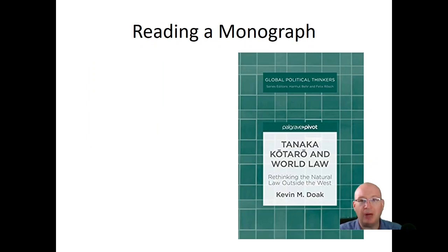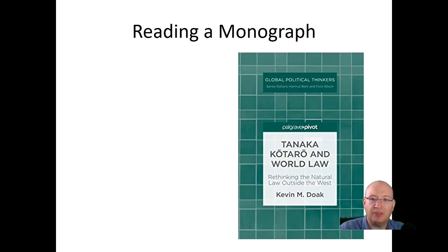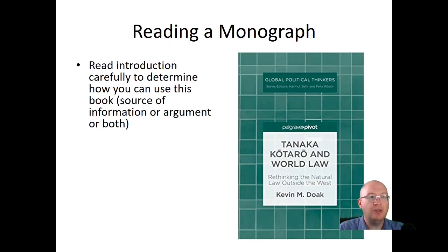Next, I want to talk about how you actually read a monograph. Here's an example — a monograph written by a friend of mine, Kevin Doak: Tanaka Kotaro and World Law: Rethinking the Natural Law Outside the West. It's a book about a Japanese jurist who thought deeply about the law, and Doak makes a certain argument about how we should understand Tanaka Kotaro. So he's making an argument — that's what a monograph does.